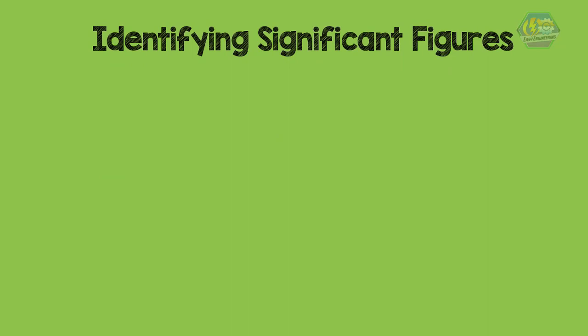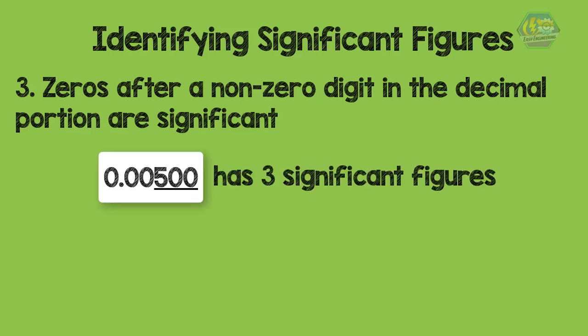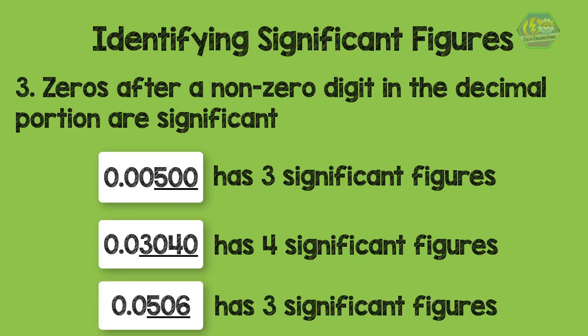Third rule: zeros after a non-zero digit in the decimal portion are significant. For example, 0.00500 has three significant figures, 0.0340 has four significant figures, and 0.0506 has three significant figures.